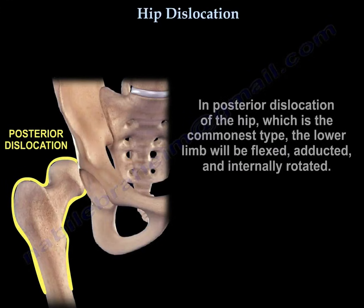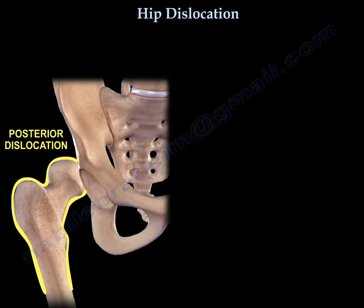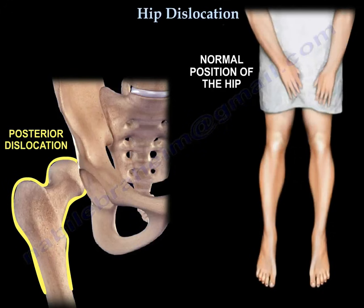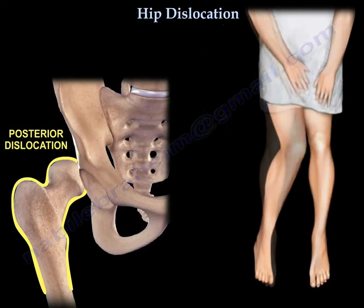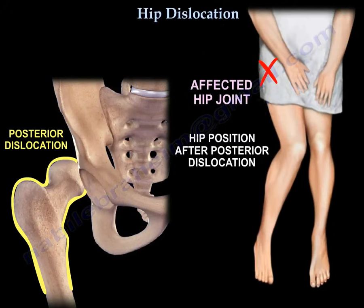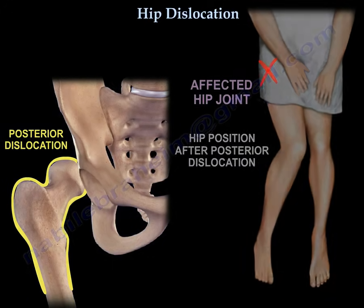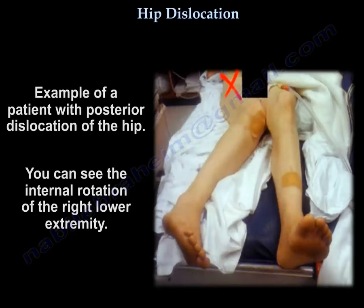In posterior dislocation of the hip, which is the commonest type, the lower limb will be flexed, adducted, and internally rotated. Here is a normal position of the hip. Here is the position of the hip after posterior dislocation. Here is a patient with posterior dislocation of the hip — you can see the internal rotation of the right lower extremity.